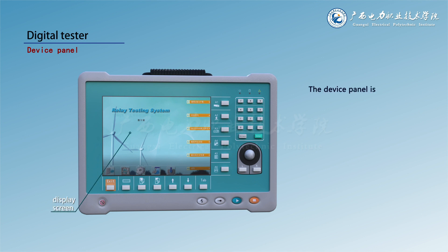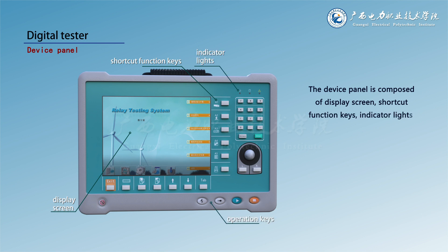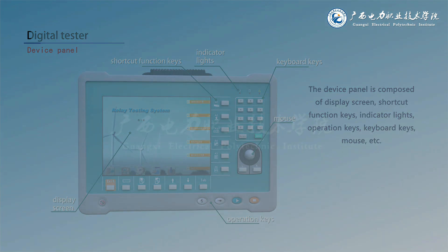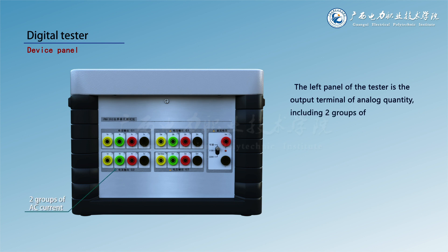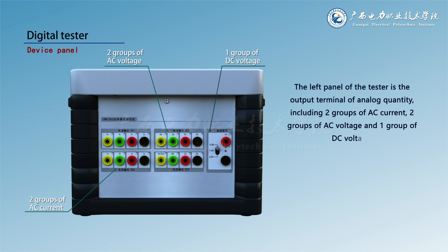The device panel is composed of a display screen, shortcut function keys, indicator lights, operation keys, keyboard keys, mouse, etc. The left panel of the tester is the output terminal of analog quantities, including two groups of AC current, two groups of AC voltage, and one group of DC voltage.